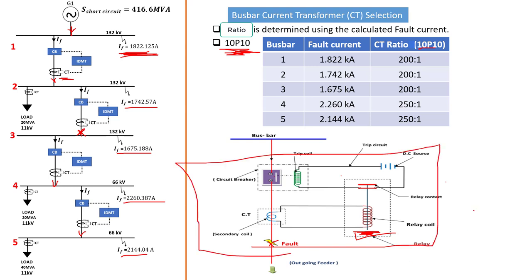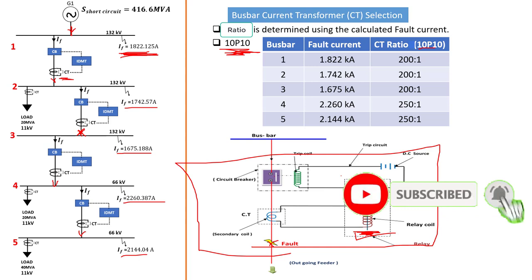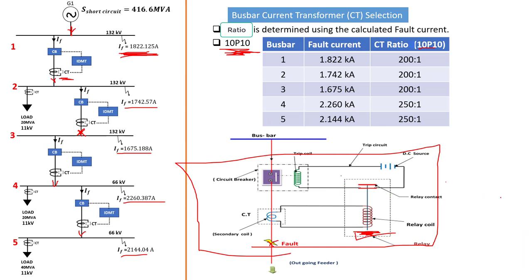That's basically how protection is ensured on bus bars — this is fundamental. There is new technology coming now — you can include intelligent devices and other apparatus. But what you see here is the fundamental of bus bar protection of your network system. If you like this tutorial and found something useful, give it a thumbs up. Don't forget to subscribe to this channel and leave your comment below — anything you want to ask, we will gladly answer. Thank you for watching, see you in the next tutorial. Cheers.